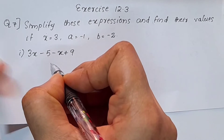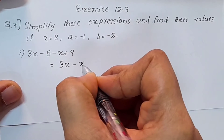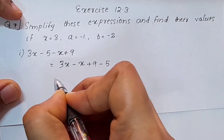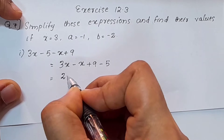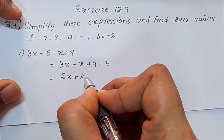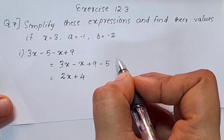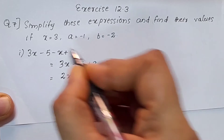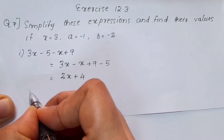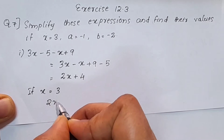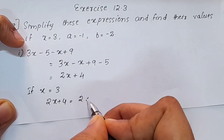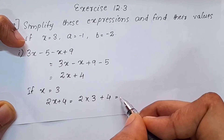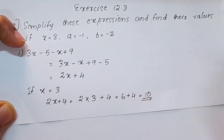We rearrange and combine like terms: 3x minus x plus 9 minus 5. That gives us 2x plus 4. Now we substitute x equals 3: 2 into 3 plus 4 equals 6 plus 4, which equals 10. The answer is 10.